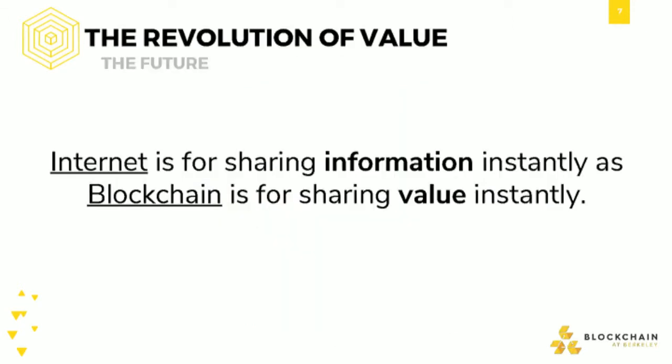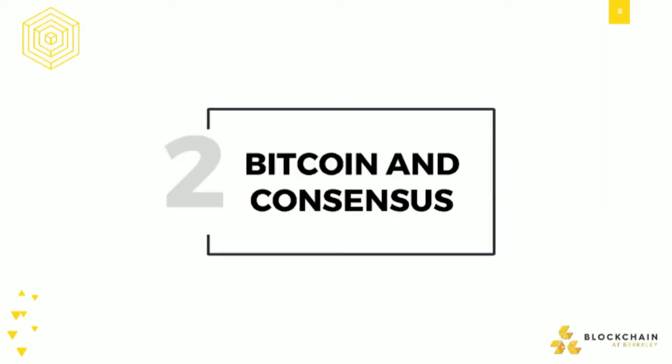The best mental model for thinking of blockchain is this: the internet was created as a way that anyone can share information instantly and in a censorship-resistant way. Blockchain is basically a way that we've created to share value instantly — something that has tangible, real value. So we'll be discussing a little bit about how that works when we start talking about Bitcoin.